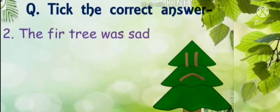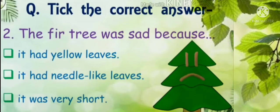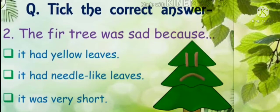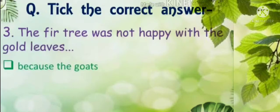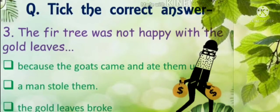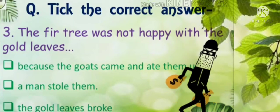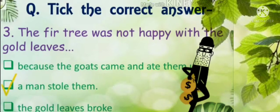Next question: The fir tree was sad because — it had yellow leaves; it had needle-like leaves; or it was very short. Why was the fir tree sad? It is because it had needle-like leaves. Next: The fir tree was not happy with the gold leaves. Why? Because a man stole them.